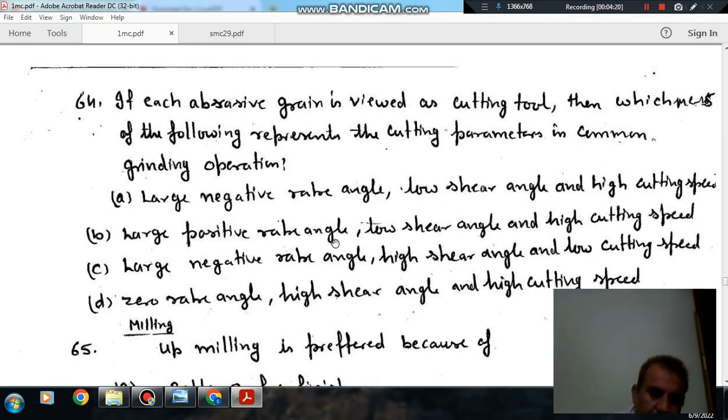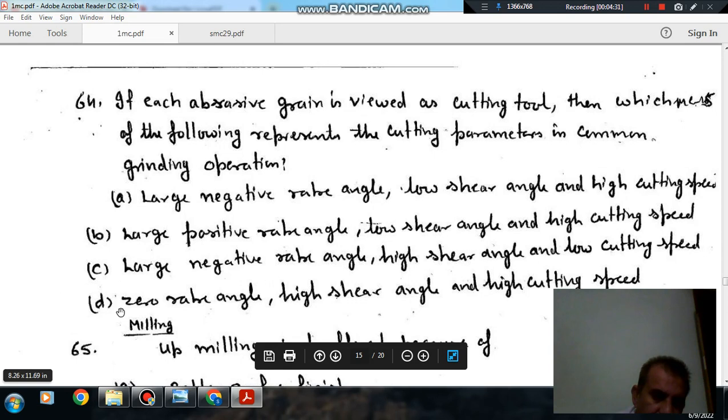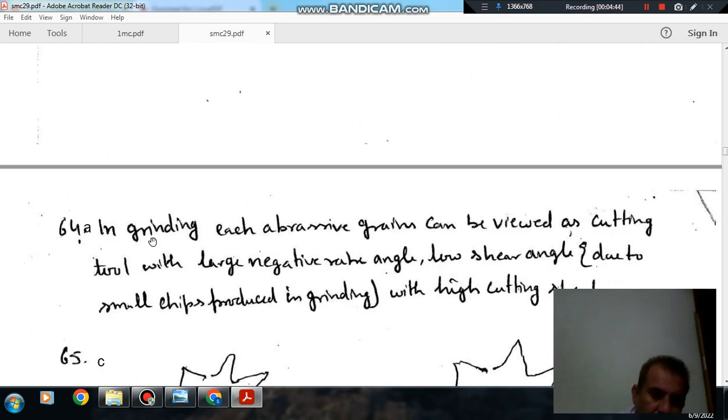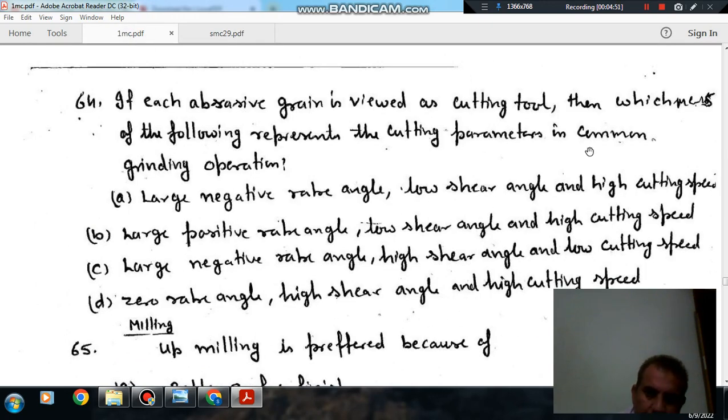Option B: large positive rake angle, low shear angle and high cutting speed. Option C: zero rake angle, high shear angle and high cutting speed. So answer is option A. In grinding, each abrasive grain can be viewed as a cutting tool with large negative rake angle, low shear angle and high cutting speed.